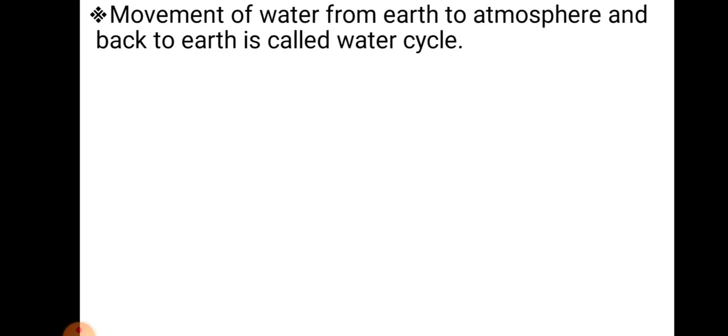Movement of water from earth to atmosphere and back to earth is known as the water cycle. You have already studied about the water cycle. The groundwater evaporates and clouds are made. The clouds burst and rain is formed. Again, that rain goes into the groundwater. Like that, the water cycle goes on.